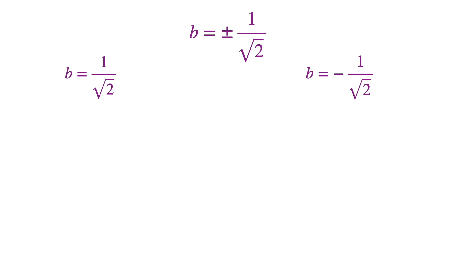Let's take each one. If b is 1 over the square root of 2, since 2 times ab is 1, a times b must be equal to a half. So that gives that a must also be 1 over the square root of 2. And so we get one answer: 1 over the square root of 2 plus 1 over the square root of 2 times i.